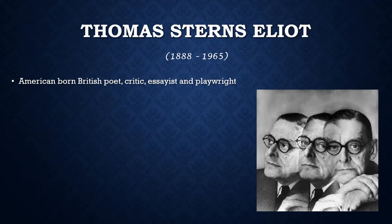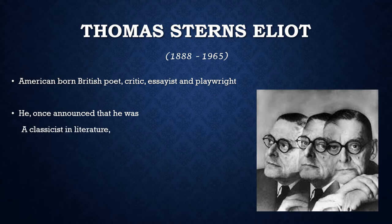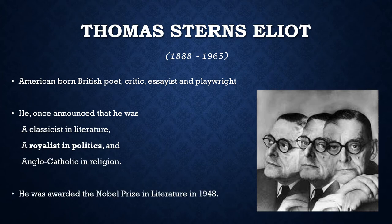Eliot's paternal grandfather, William Greenleaf Eliot, had established the city's Unitarian Church. Raised by Unitarian family values and an Irish Catholic nurse named Anne Dunne, as well as teachers like conservative moralists George Santayana and Irving Babbitt, Eliot had a very contrary influence which can be observed in his poetry, especially in The Waste Land, where high and low dialects and popular and classical culture are contrasted. He announced that he was a classicist in literature, a royalist in politics, and Anglo-Catholic in religion. He was awarded the Nobel Prize in Literature in 1948 for his outstanding pioneer contribution to present-day poetry.